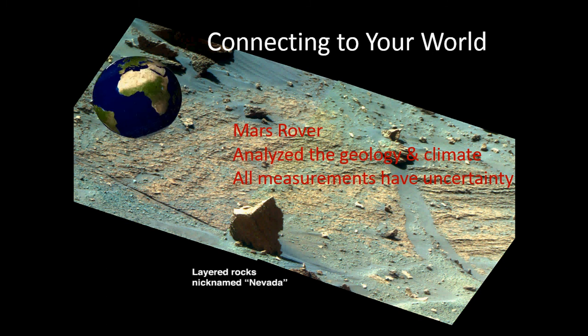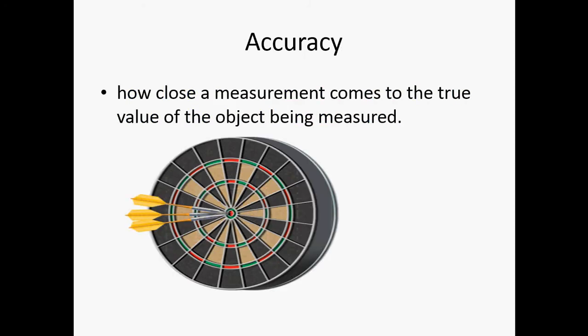Some terms we need to know in chemistry are accuracy and precision. Accuracy is how close a measurement comes to the true value of the object being measured.